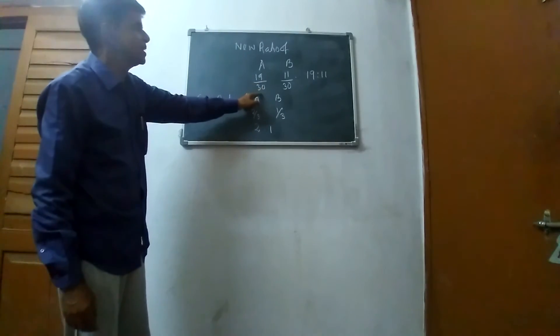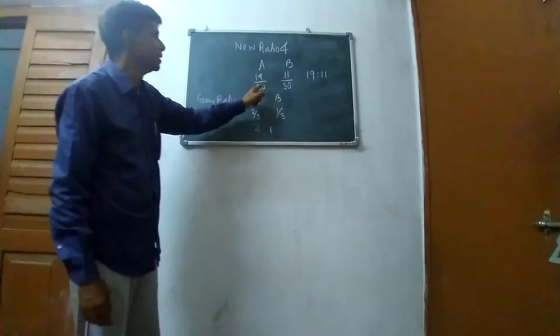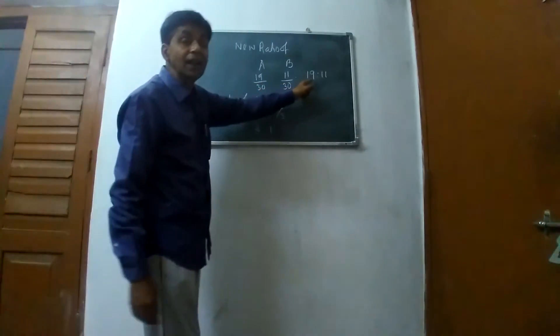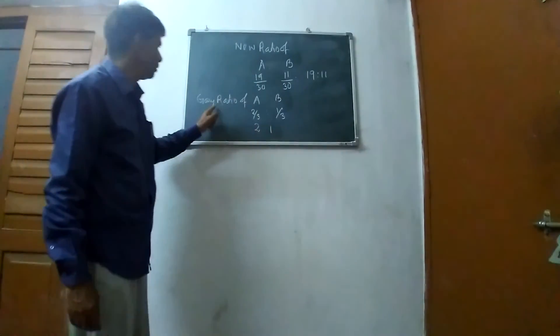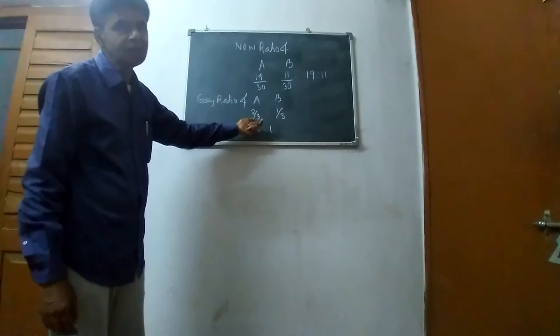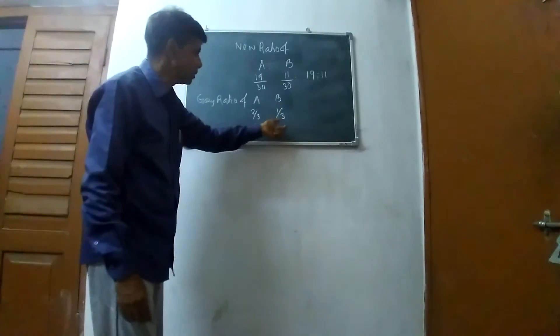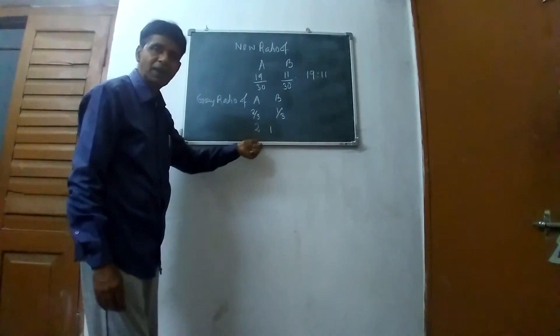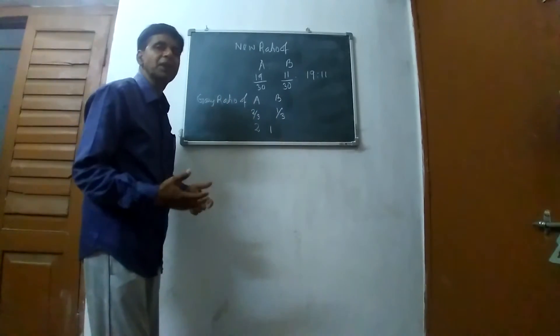The new ratio we calculated: A is 19/30, B is 11/30, so it's 19:11. And gaining ratio: A got 2/3rd from C, B got 1/3rd, so it's 2:1.